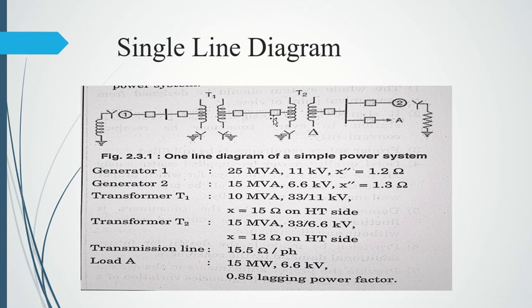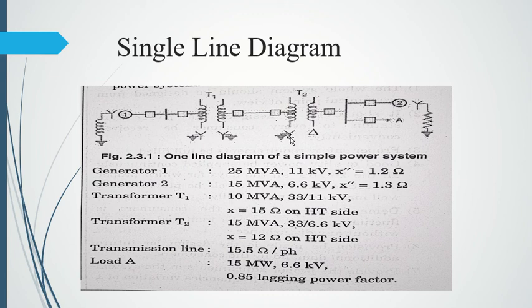Transformer T1 is rated 10 MVA, 33/11 kV, with a reactance of 15 ohms on the high-tension (primary, 33 kV) side. Both primary and secondary sides have grounded star connections. From T1, there is a circuit breaker, then a transmission line, then another circuit breaker before transformer T2. T2 is rated 15 MVA, 33/6.6 kV, with reactance of 12 ohms.